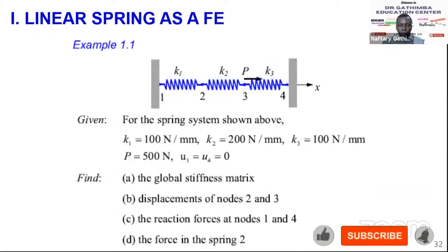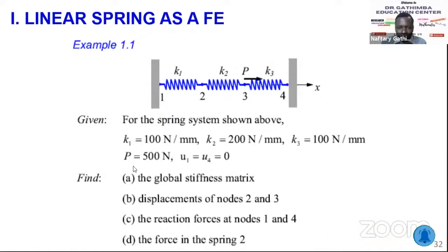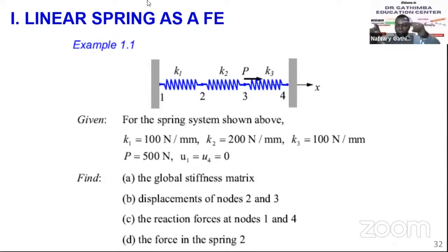In Example 1.1, you are given a spring system as shown where k1, k2 are given and P is given. We need to determine the global stiffness matrix — the assembled stiffness matrix for the whole system. We have three springs and need to get the displacement at nodes 2 and 3, the forces at nodes 1 and 2, and the forces in spring 2.